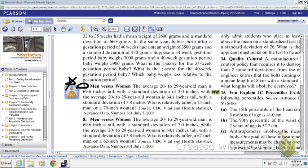I'll put a big star on it here, number 7. Hopefully you can read it, I'll read it with you. The average 20 to 29 year old man is 69.6 inches tall with a standard deviation of 3 inches, while the average woman is 64.1 inches tall with a standard deviation of 3.8 inches. Who is relatively taller, a 75 inch man or a 70 inch woman?